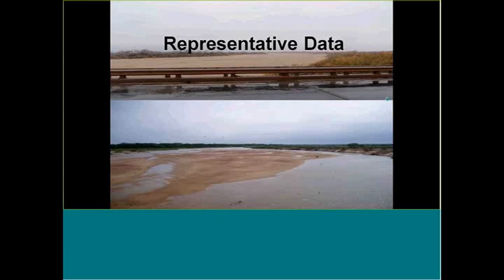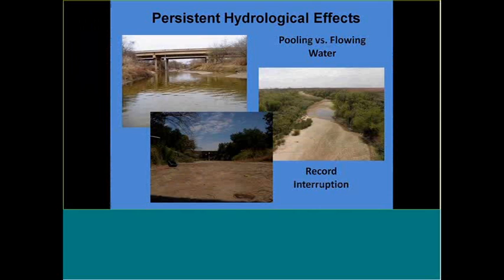Let's talk about effects on representative data first. One thing, obviously, is persistent hydrological effects — pooling versus flowing water — and record interruption occurs. How do you monitor this in accordance with protocols you've been following forever? How do you match up these two record sets? That's a challenge we're still facing. If you're monitoring only stagnant pools, which is the available water, how does that relate back to what was typically flowing water, even at its lowest level? And if you have significant record interruption month after month, that becomes a significant issue.